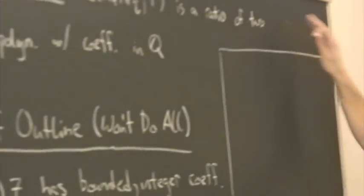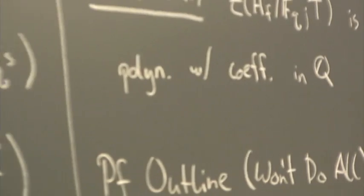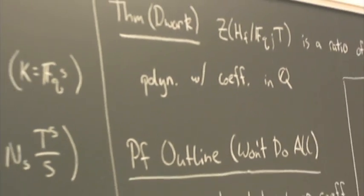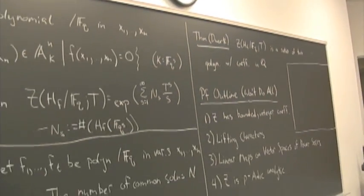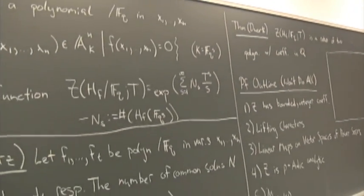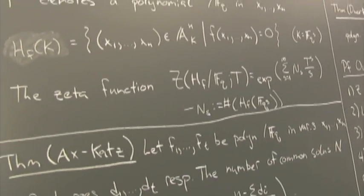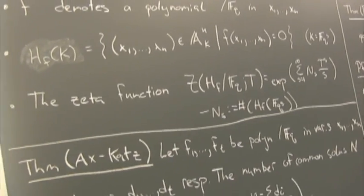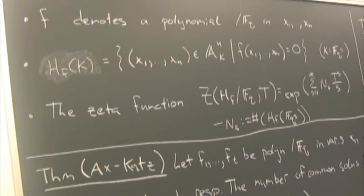Today I want to talk about Dwork's proof that the zeta function of a hypersurface over a finite field is, in fact, a rational function. This is interesting for some reasons I talked about already, and also as an interesting consequence — this is like an exercise for the audience.